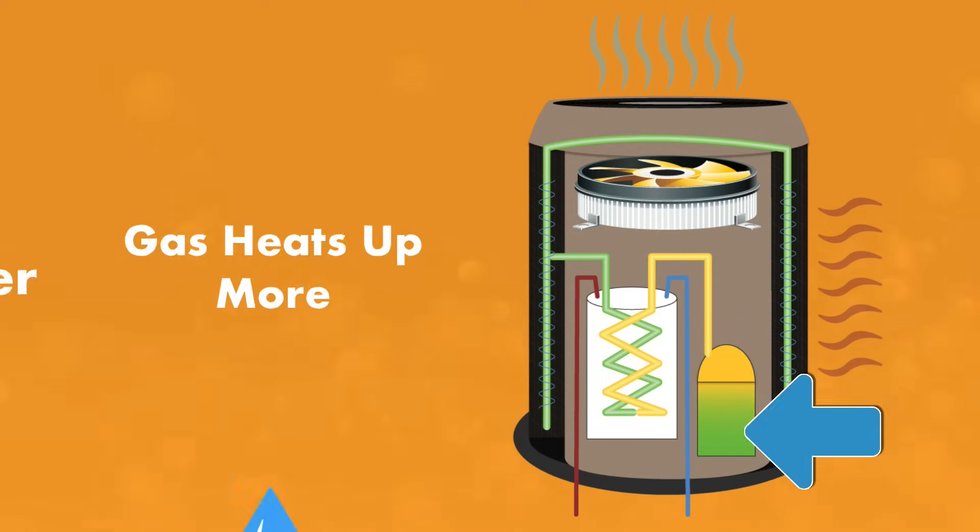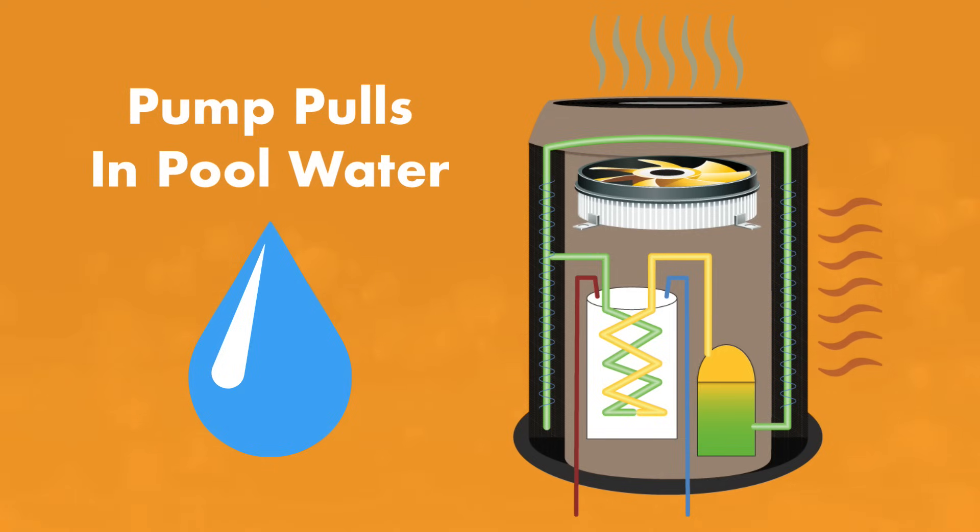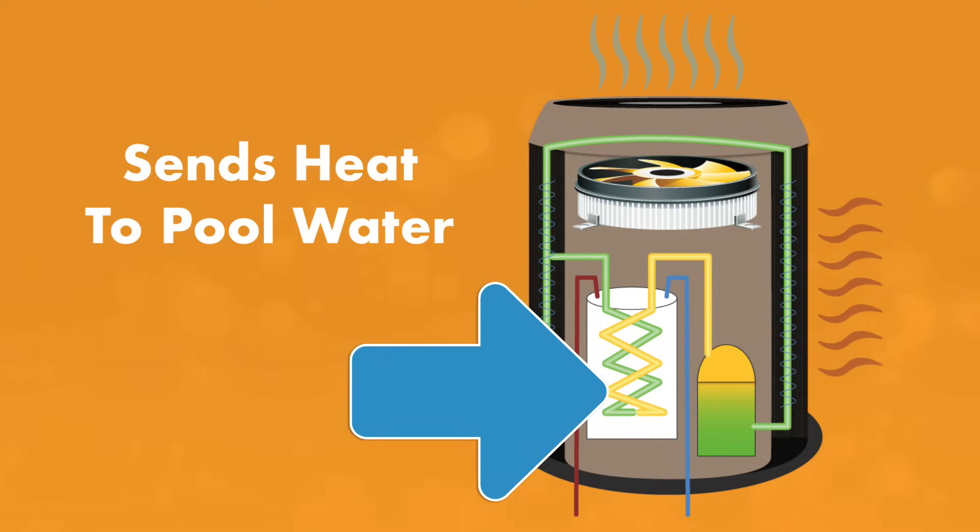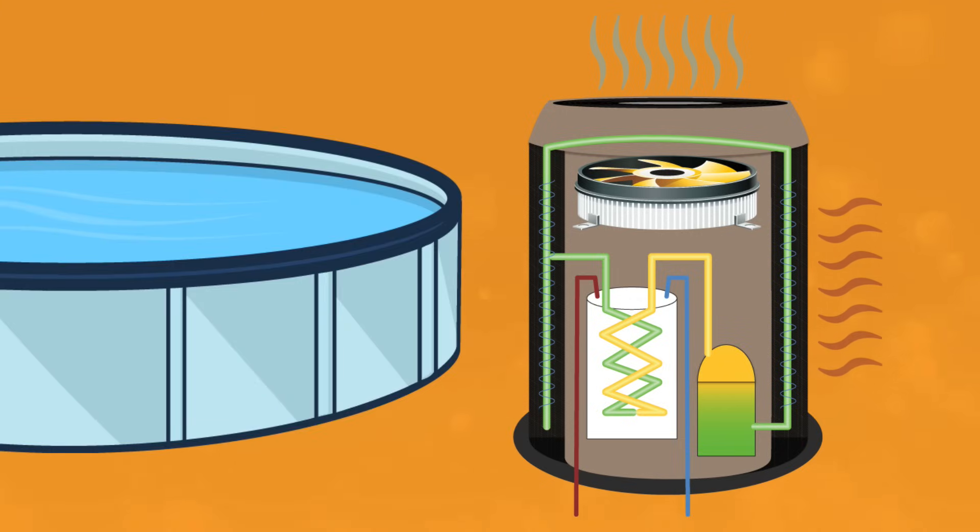At the same time, your pump is pulling in cooler pool water. The hot gas and the cool water transfer heat in the heat exchanger, warming up your pool water by three to five degrees Fahrenheit. Then that warmer water flows back into your pool. Meanwhile, the hot gas is passing through your condenser, turning back into liquid freon, and the entire process begins all over again.